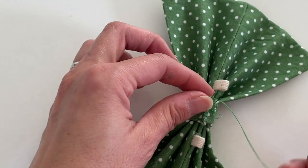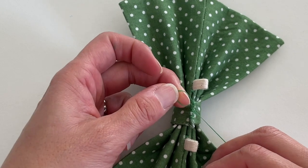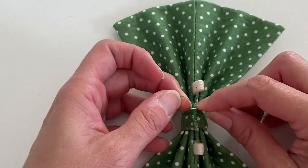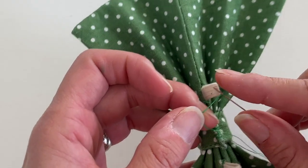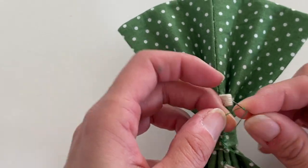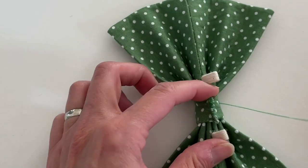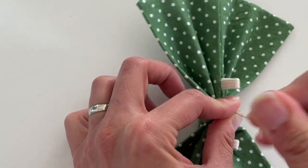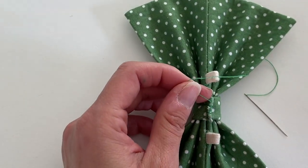And then to knot my final stitch, I'm going to keep a loop that is not all the way closed. I'm going to wrap my thread around my needle three or four times and then pull very tightly and that will knot it. And then I can cut the thread off.